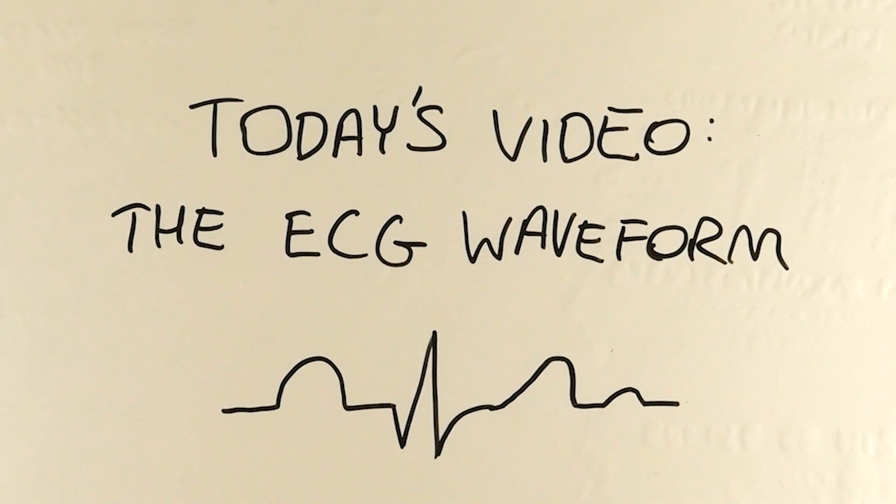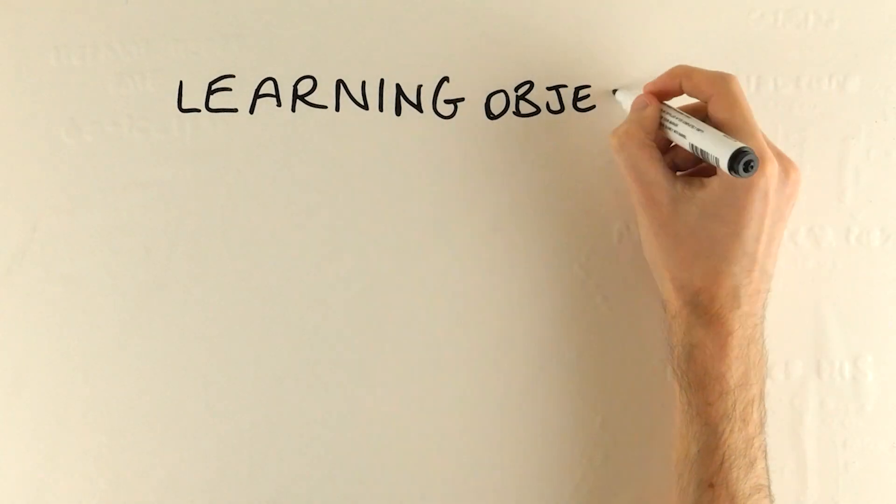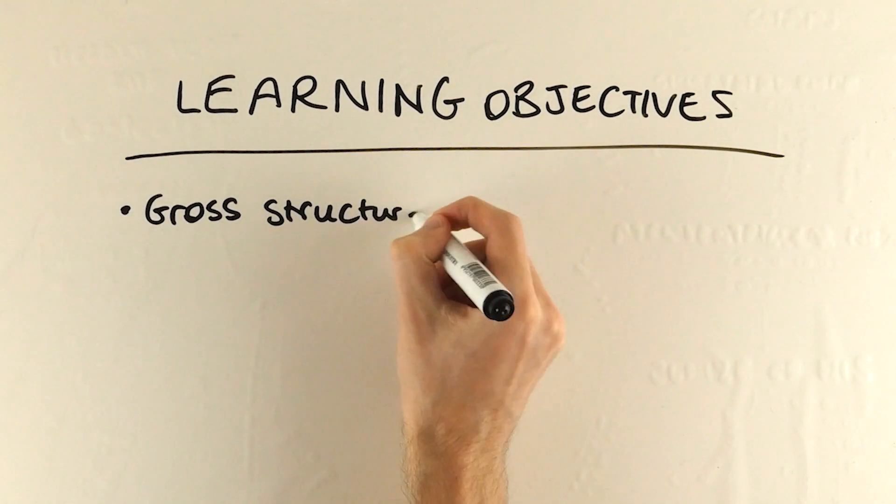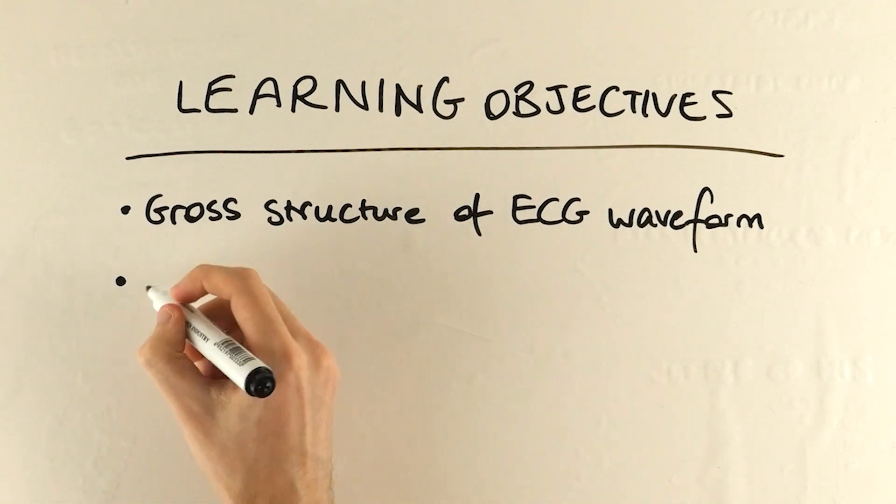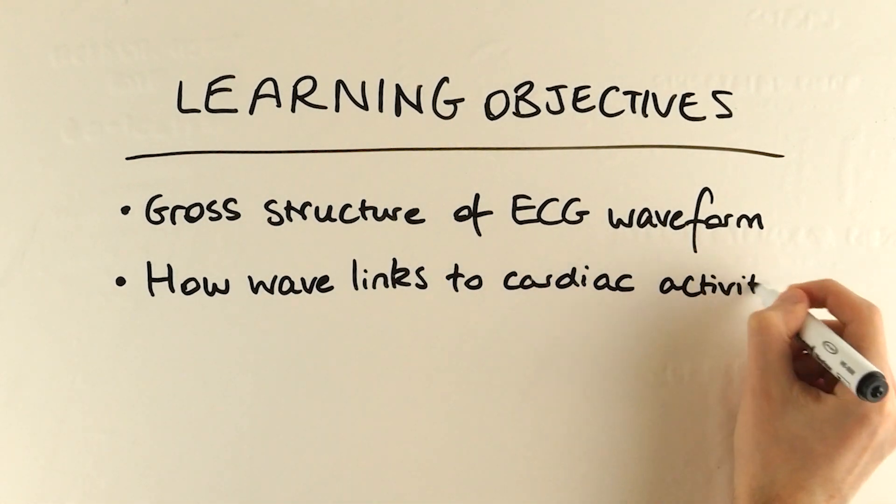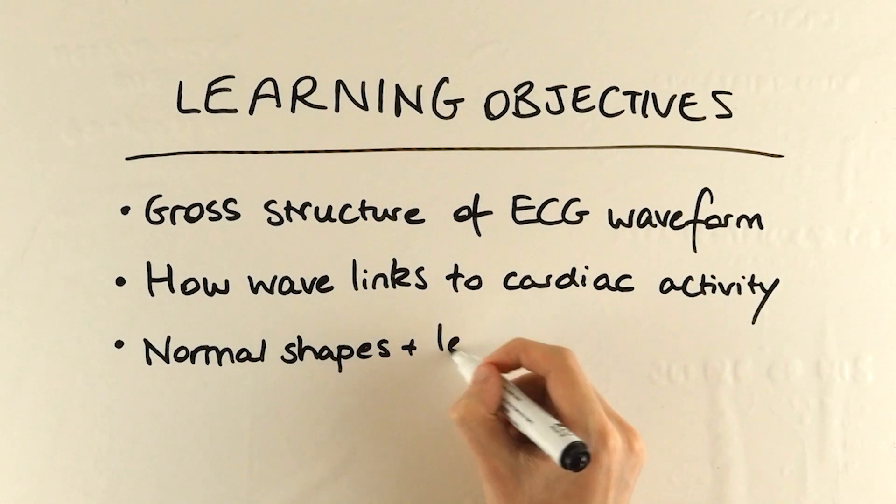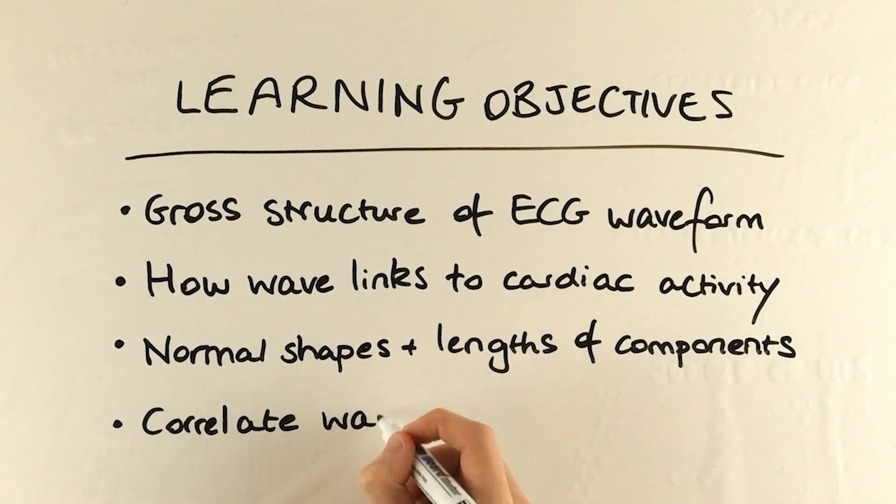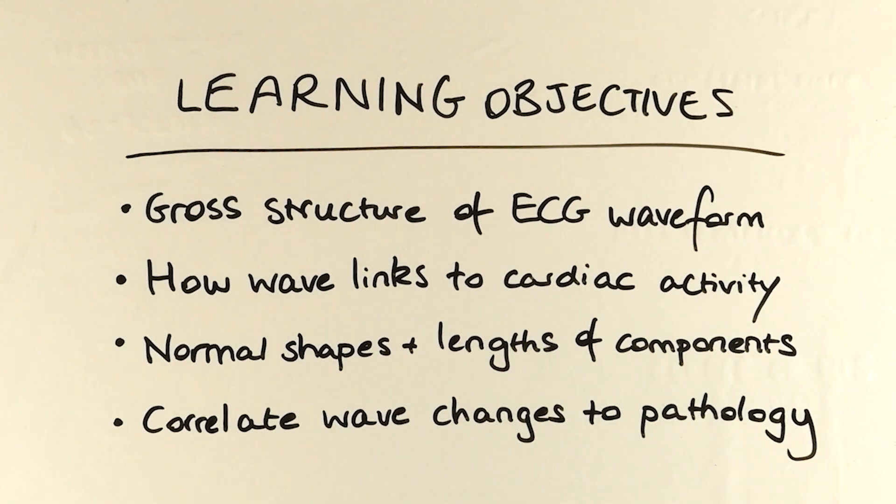So we'll cover the following learning objectives today: gross structure of the ECG waveform, knowing how each of the wave components links to activity within the heart muscle, understand the normal lengths and shapes for each wave component, and know some of the basic clinical correlates to ECG shape changes.